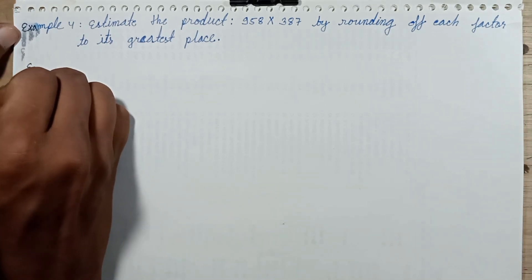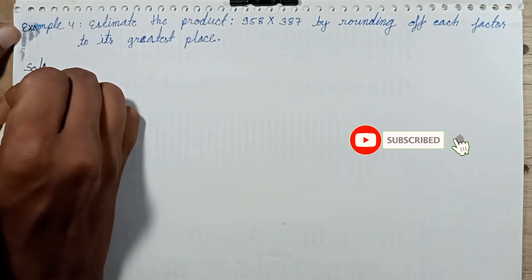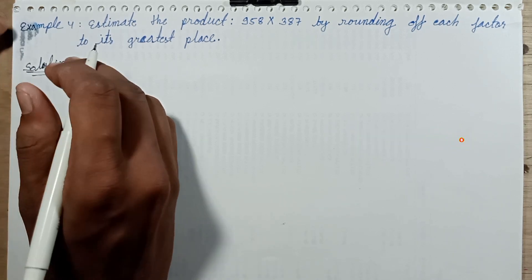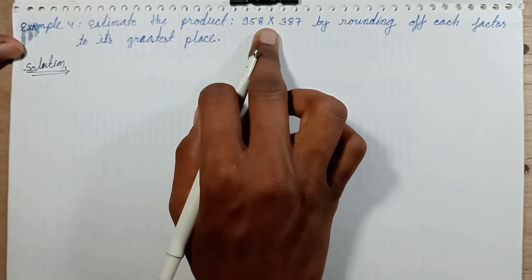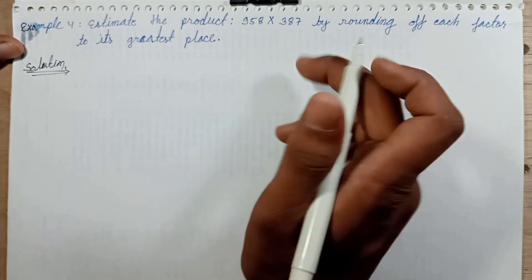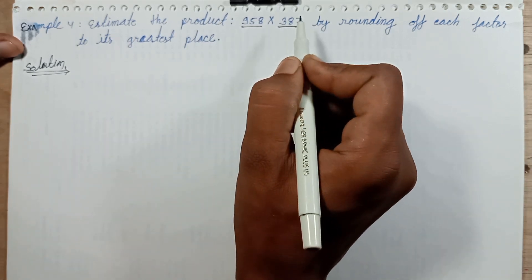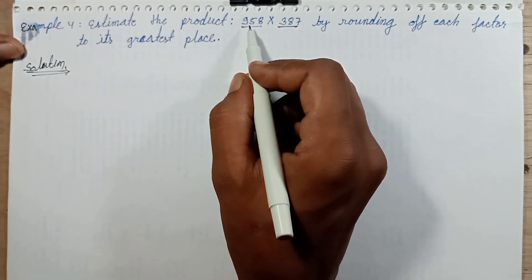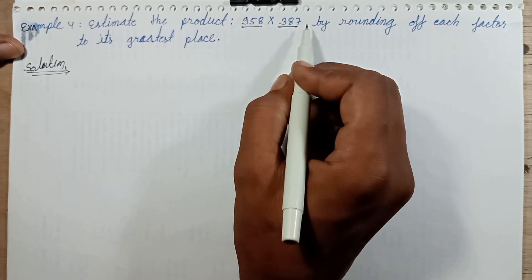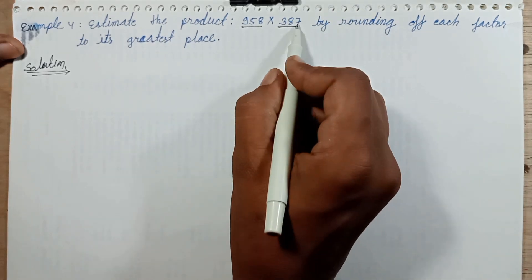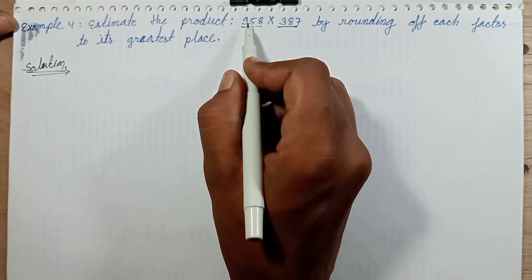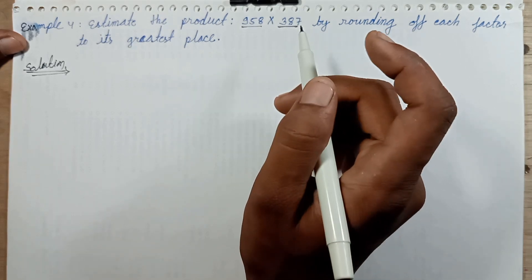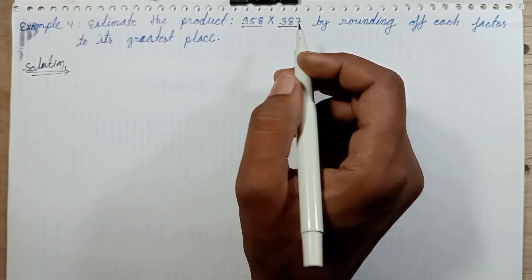Let's solve this question. Each factor is a three-digit number, so we round each number to the nearest hundred place — ones, tens, hundreds. We round every factor to the nearest hundred place. Let's solve one by one.